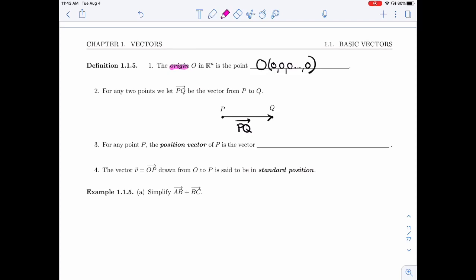So, if I have any point, I'm going to define a position vector to be the vector from the origin, from O to P.